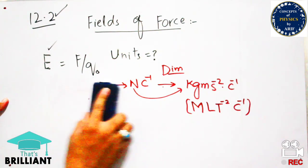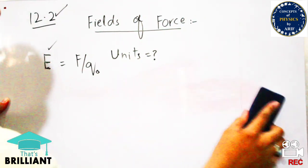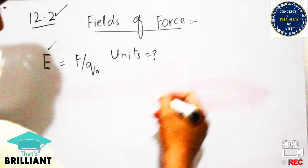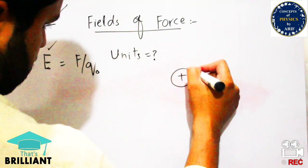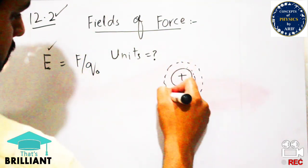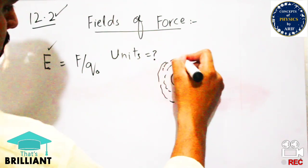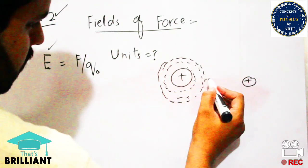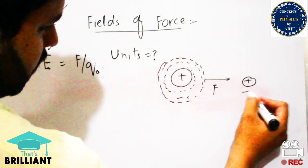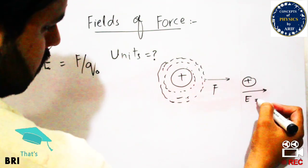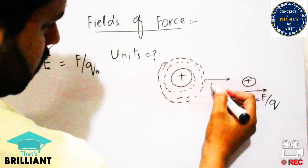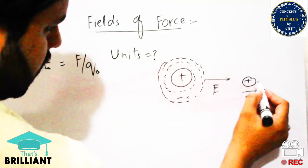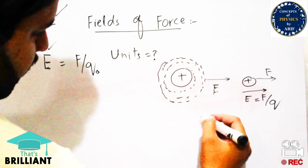In entry tests, you can be asked questions related to the dimension of electric field intensity, as this is a confusing topic. Furthermore, when we place a source charge, the density of the dotted lines is directly proportional to the force. If the density of dotted lines is very high, then the electric field is very high. As we move radially outward, the electric field intensity decreases.